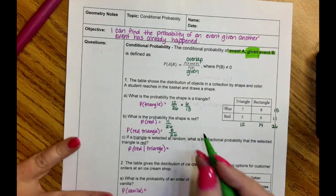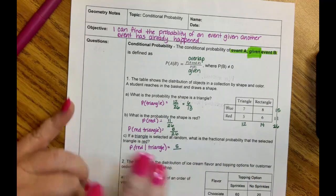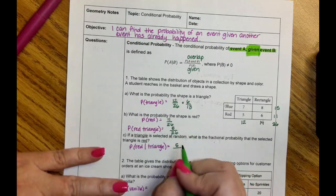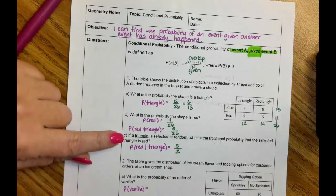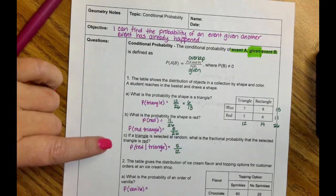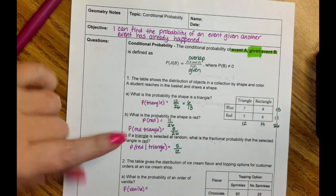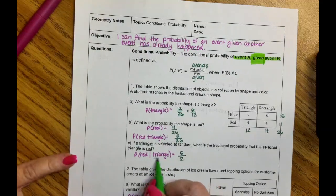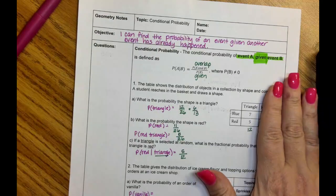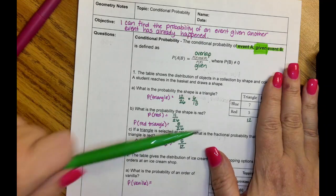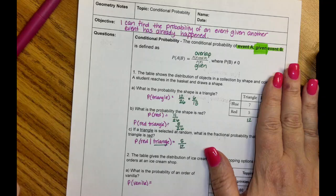So now there are five red triangles in the bag, and I've minimized it down — there are 12 triangles in the bag given that it's a triangle. If a triangle has been selected at random — that's already happened — what is the fractional probability that the selected triangle is red? You only look at the triangle column and care about red and blue. The probability of getting a red triangle out of the triangles is 5 out of 12 — 5 red out of 12 triangles. That is conditional probability.